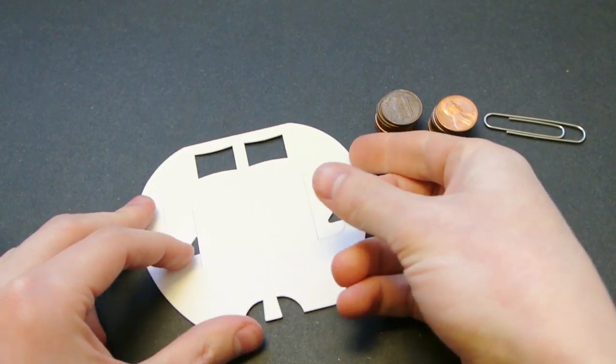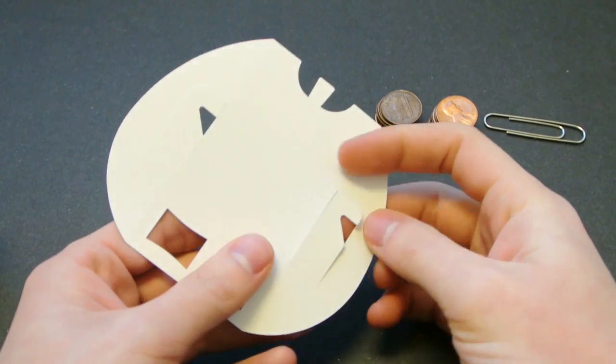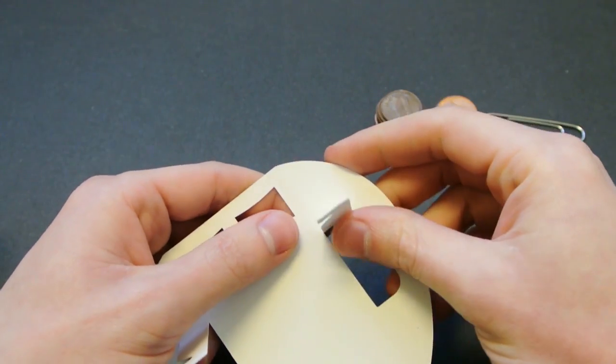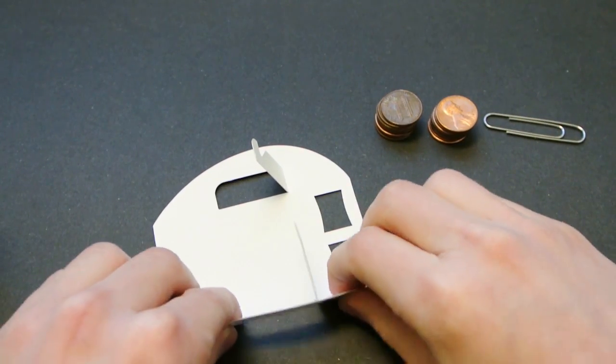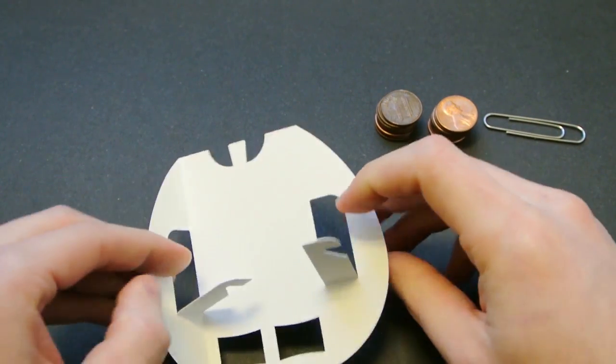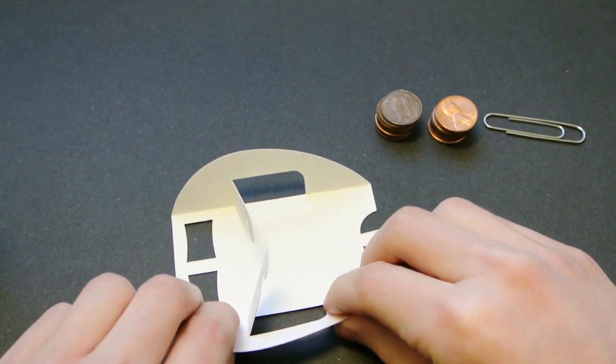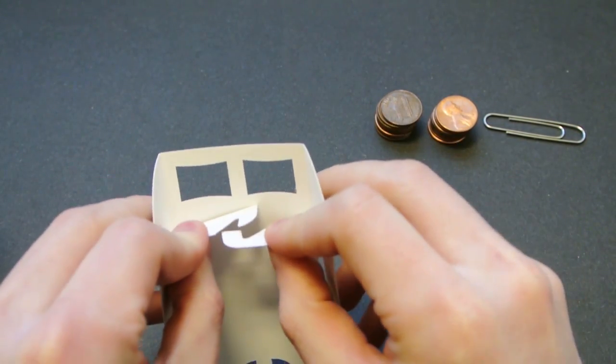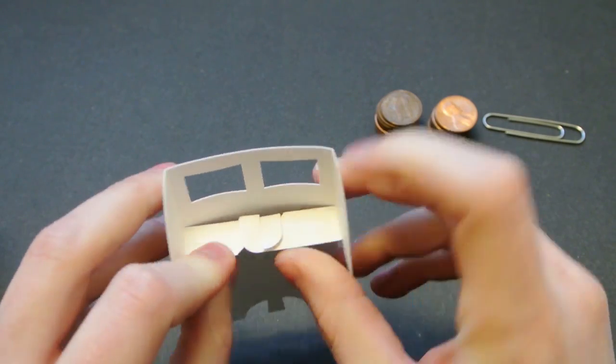We start out by bending these small tabs up at about 90 degree angles. Then we bend the longer side ends in at right angles and interlock the small tabs in the center.